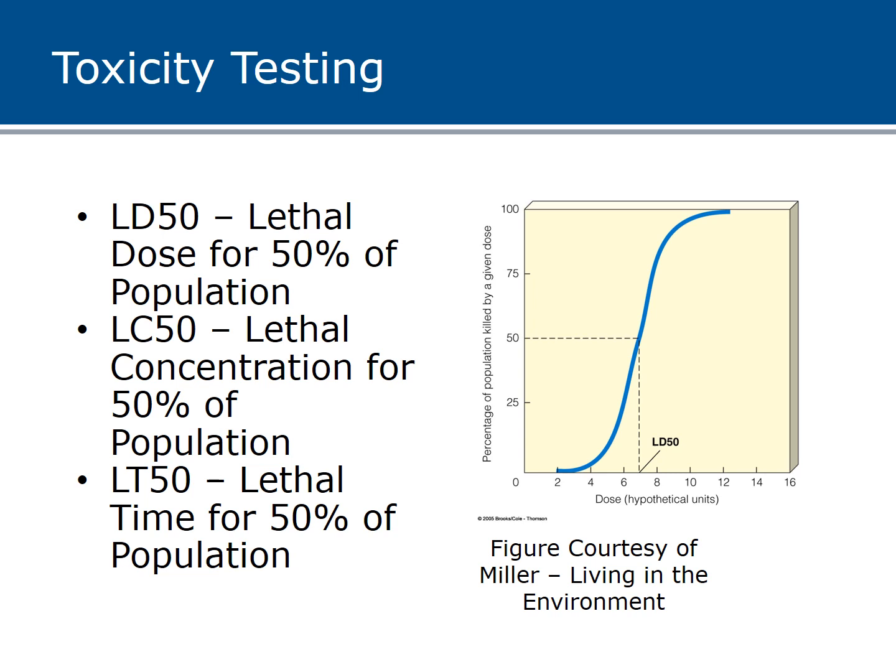LD50 is the lethal dose for 50% of the population — for example, injecting lab rats with a chemical to find the dose that kills them. For aquatic organisms, we use LC50, the lethal concentration for 50% of the population — in this case, seven hypothetical units would kill half the organisms. There's also the concept of LT50, the lethal time for 50% of the population to die. If you knew a dose of seven units would kill them, how long would it take? Was it a quick acute effect, or more of a long-lasting chronic one where it takes longer for 50% to die? All of these are different measures of how different chemicals are toxic.